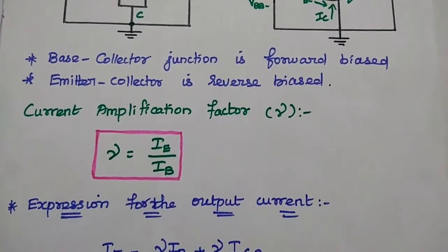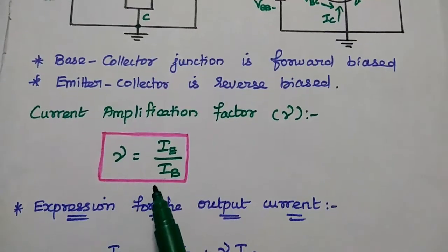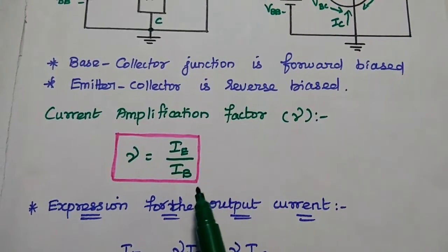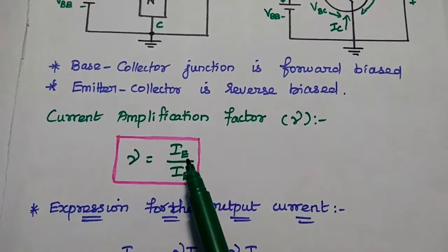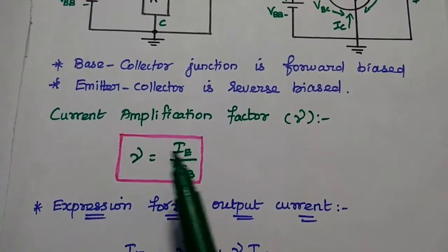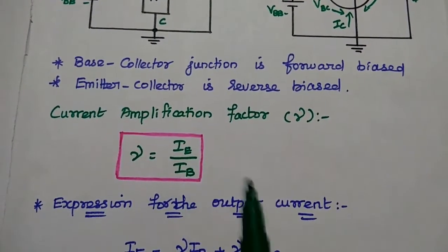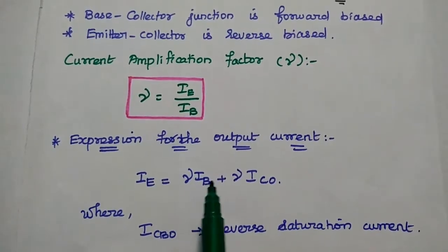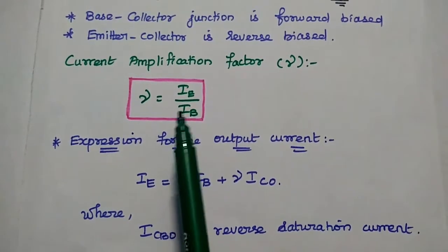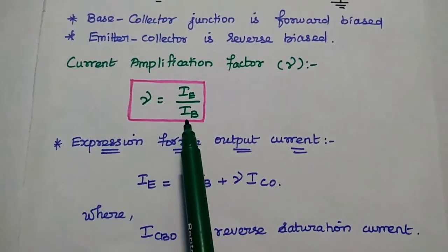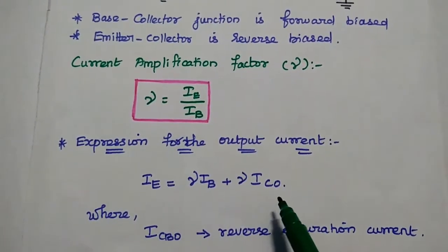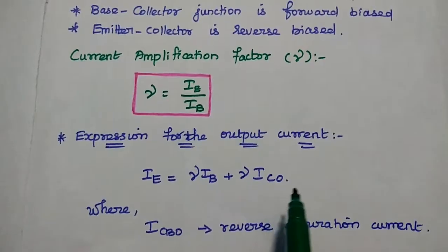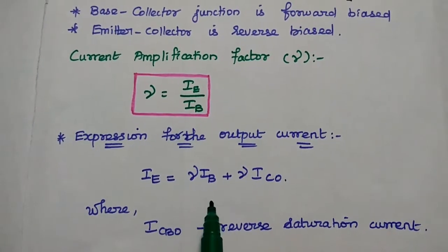The current amplification factor is represented as gamma for common collector configuration. It is defined as the ratio of output current to input current — that is, emitter current to base current — so gamma equals IE divided by IB. The expression for the output current is: emitter current equals gamma·IB plus gamma·ICO, where ICO is the reverse saturation current or leakage current due to the reverse bias condition with the base open.